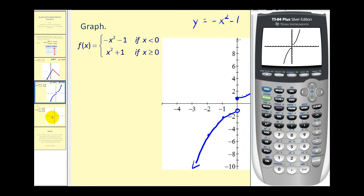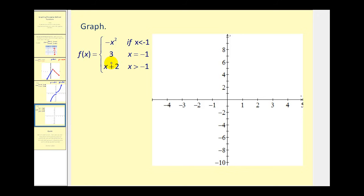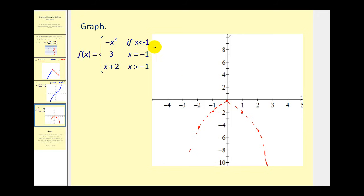Let's try one more — this one has three pieces. The second rule is just a single point: when x equals negative one, y equals positive three. We start by graphing y equals negative x squared, a parabola opening downward. We only want this when x is less than negative one, so at x equals negative one we place an open circle and keep only the small piece to the left, erasing the portion to the right.